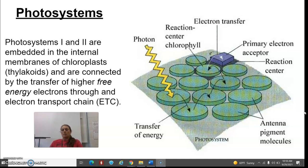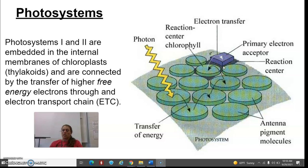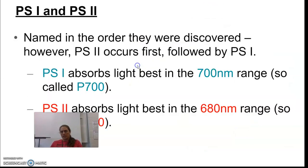Eventually they're going to bounce around and hit a primary electron acceptor, and this is where all the action happens. As soon as it hits that primary electron acceptor, it shoots up the energy and attaches it to a hydrogen. So that's kind of the gist of the photosystems.